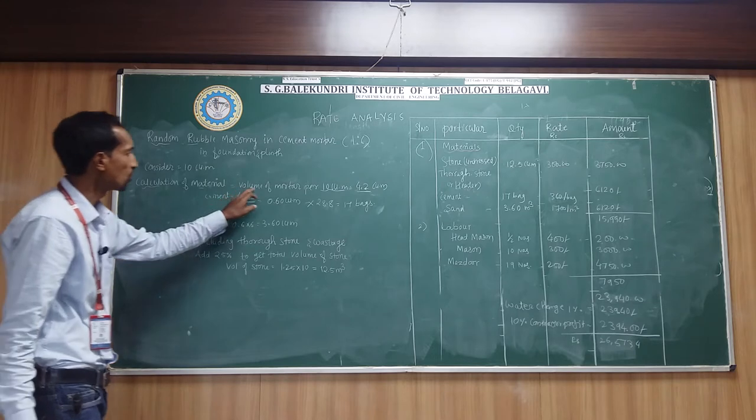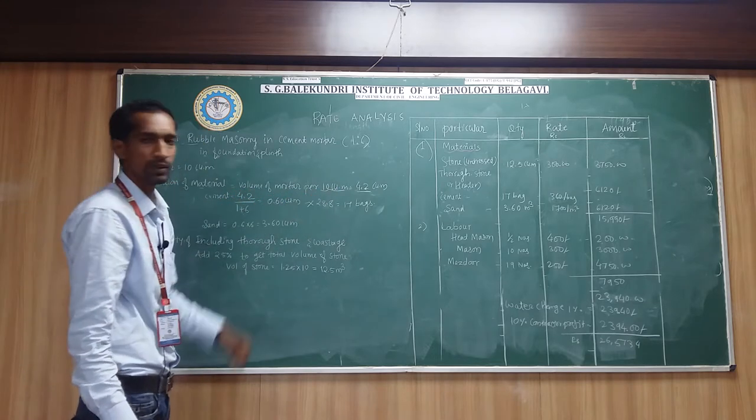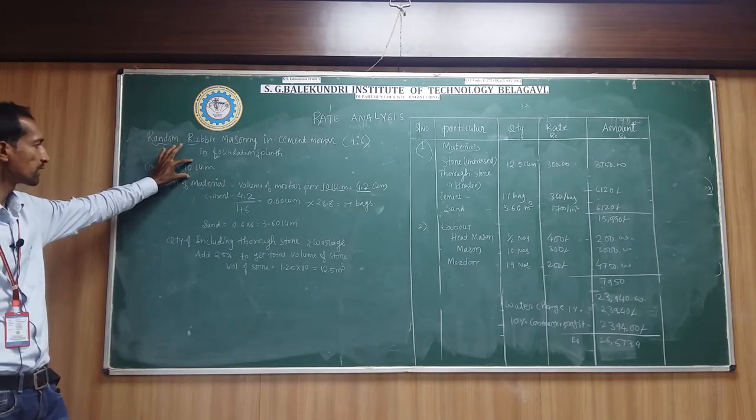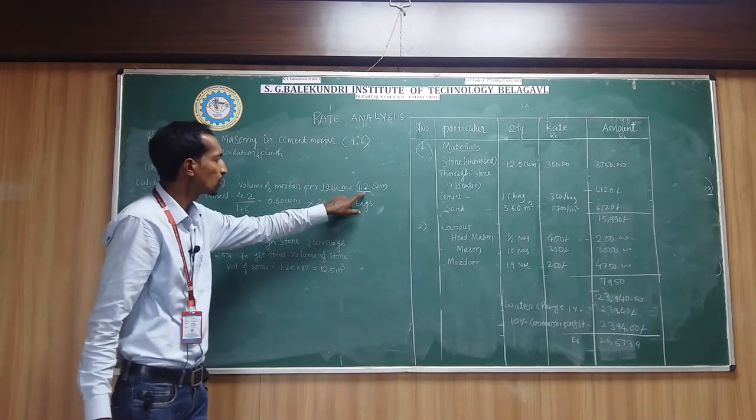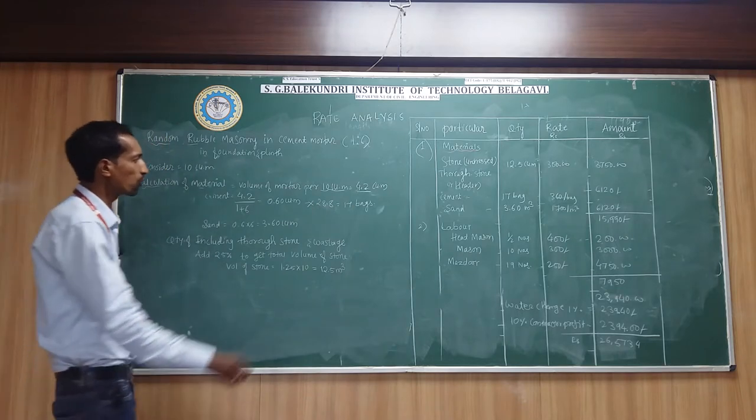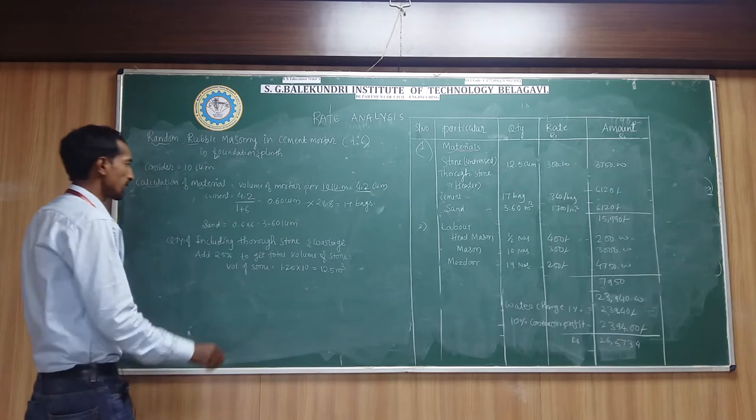Calculation of this is volume of mortar per 10 cubic meter. Means construction of 10 meter cube of random rubble masonry we require 42 percent of mortar, or 4.2 meter cube of mortar is required.